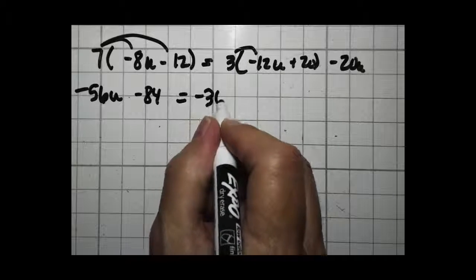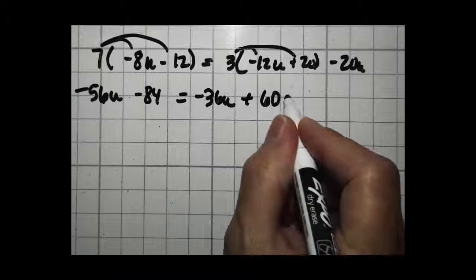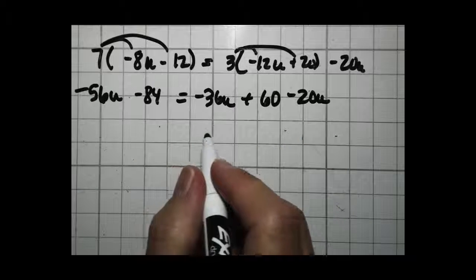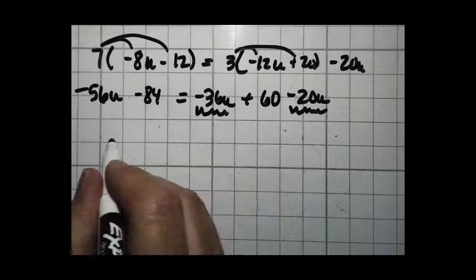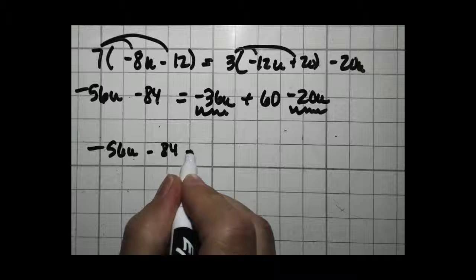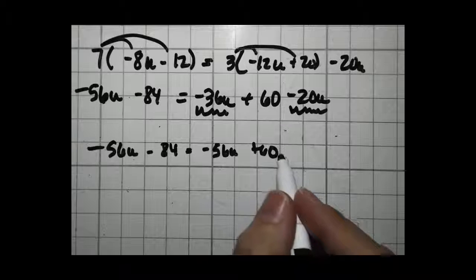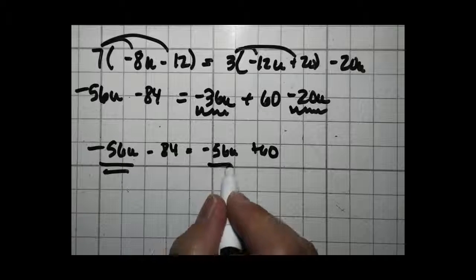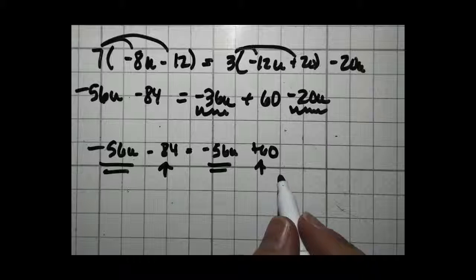3 times negative 12 is negative 36u. 3 times 20 is 60, minus 20u. So now I have some like terms to combine. I have negative 36u minus 20u. So negative 56u minus 84 equals negative 56u plus 60. I see where this is going already. I have negative 56u on both sides, but the other numbers are not the same. So I know right now there's no solution.